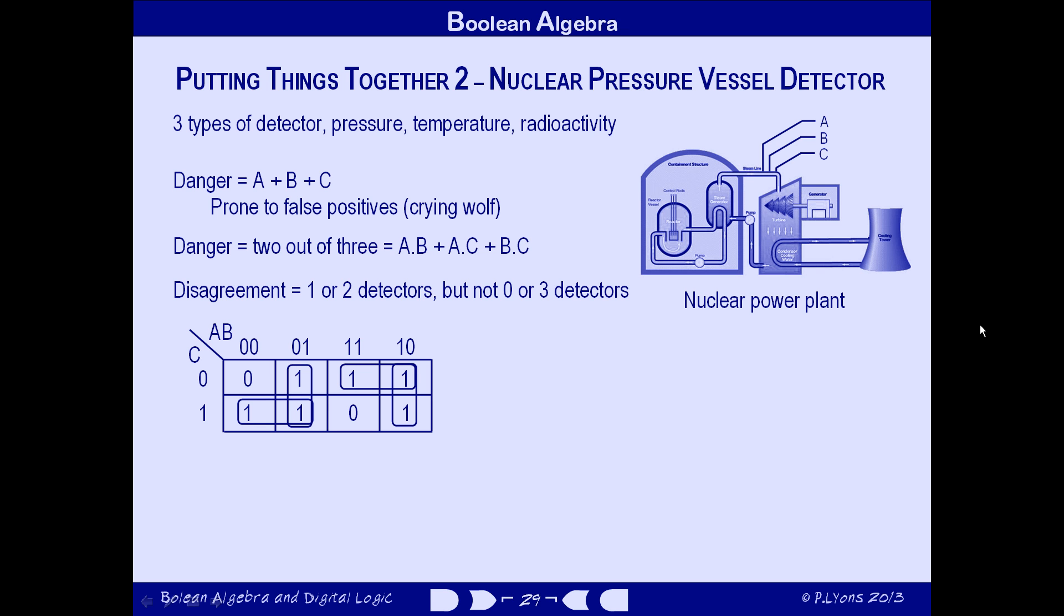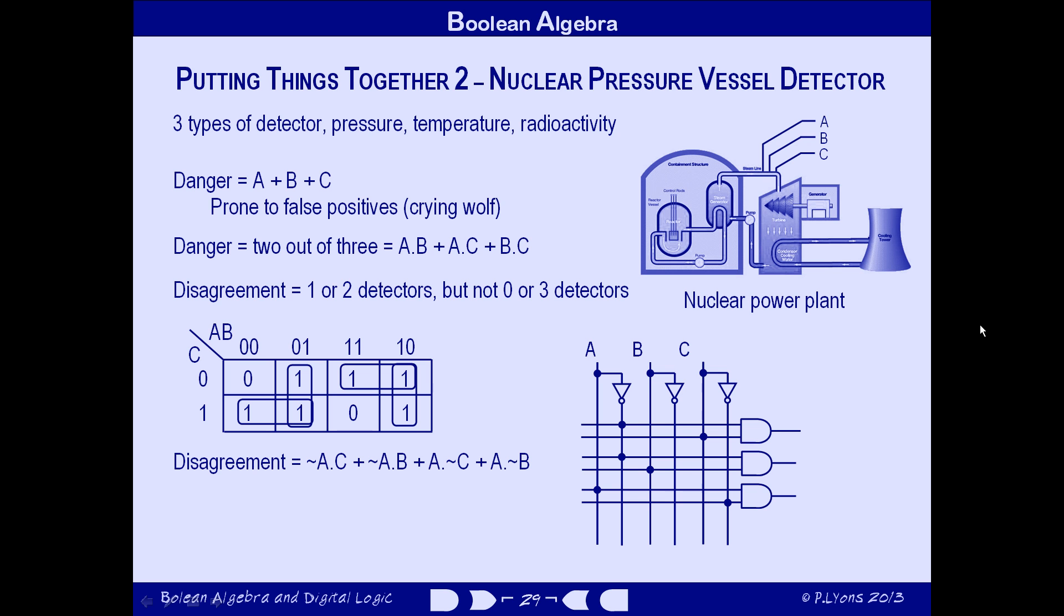Now we can put rings around the sets of ones that conform to our rule. Rectangular arrangements and a power of two ones in the group. Unfortunately, the ones are arranged in a somewhat uncooperative way. We can only reduce the six ones down to four rings. Well, never mind. Let's press on with the circuit. Again, as on the previous slide, if you haven't covered the circuit design section of the course, you can jump ahead to the next slide now and come back to this when you know something about logic circuit design. So now we write down the corresponding Boolean expression and get on with the digital logic circuit. We have three inputs, A, B and C, and four AND gates, one for each term in the expression. Not A and C, not A and B, A and not C, and A and not B. All ORed together to produce the disagree output. So that's the circuit.